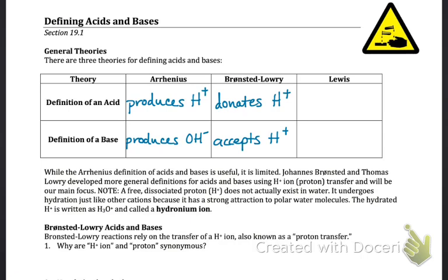The other theory is the Lewis theory, which covers even more substances. The focus here is on what's happening with available electrons — this is easiest to understand by drawing structures out. A Lewis acid is anything that accepts electron pairs, and a Lewis base is anything that donates electron pairs.